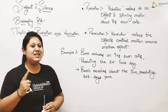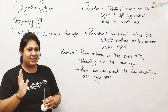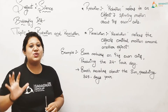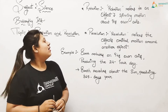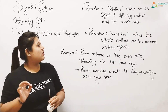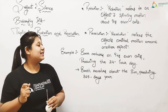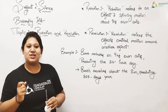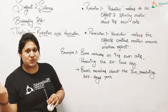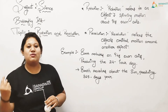Can you do this with me, kids? This is called rotation. Now let me explain something about revolution. Revolution refers to the object's orbital motion around another object. Moving around any other object — that is called revolution.